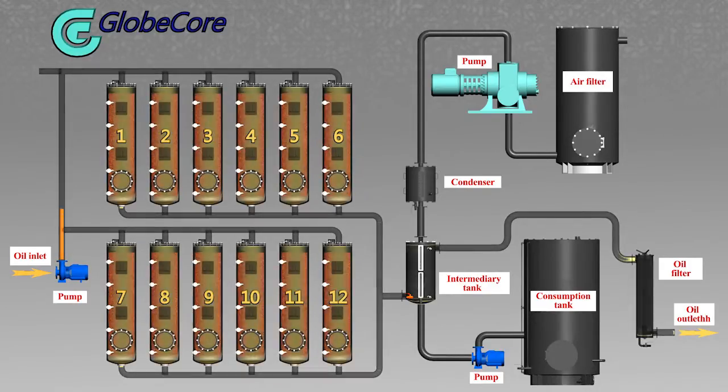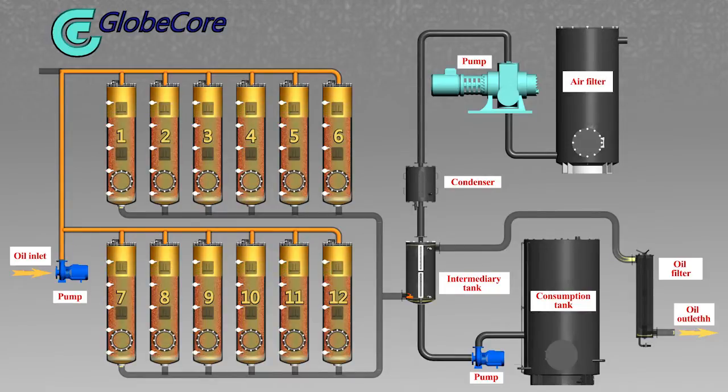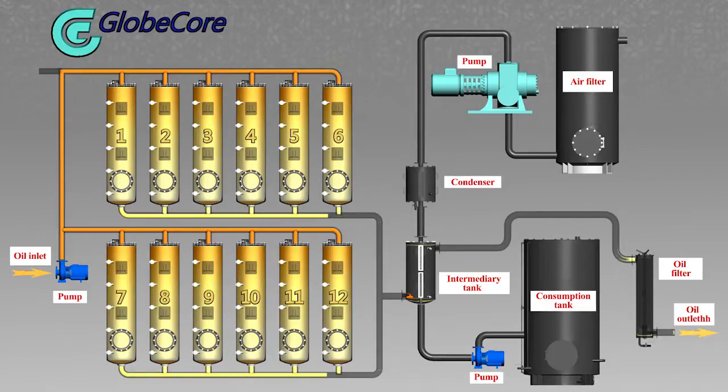When regeneration is started, the input pump directs oil to the sorbent columns. Molecular oil filtration takes place in the columns. At this time, the oil color is improved. After regeneration, the oil flows to the intermediary tank and then to final polishing.